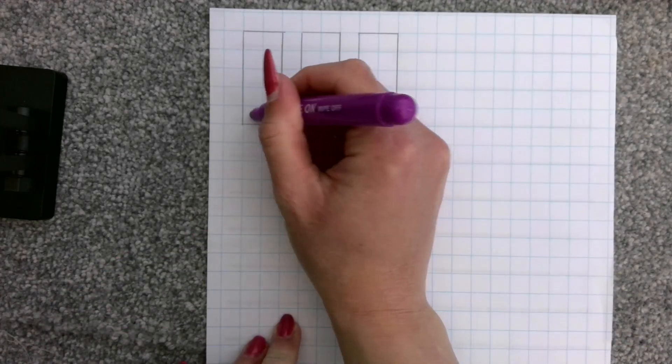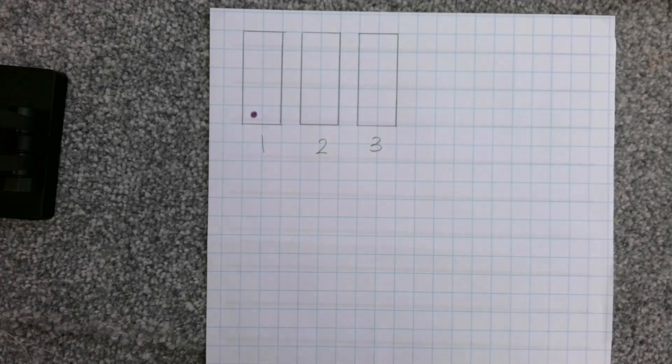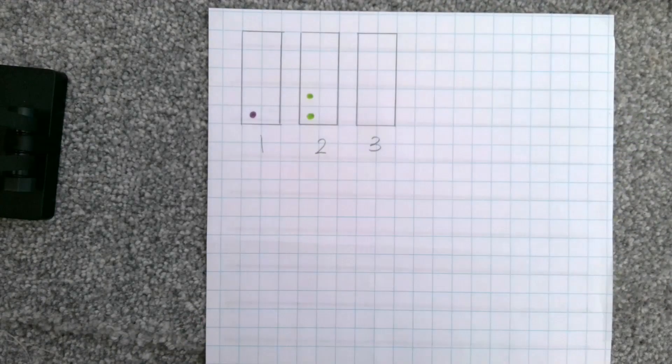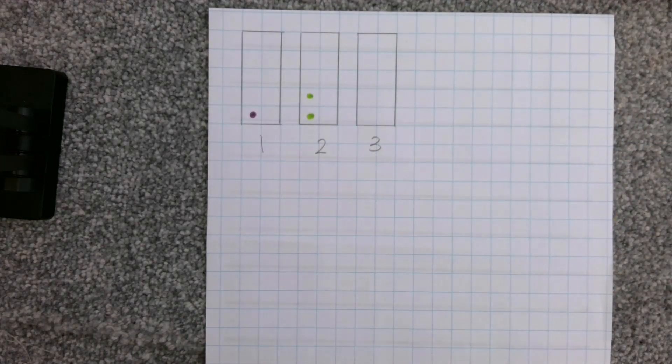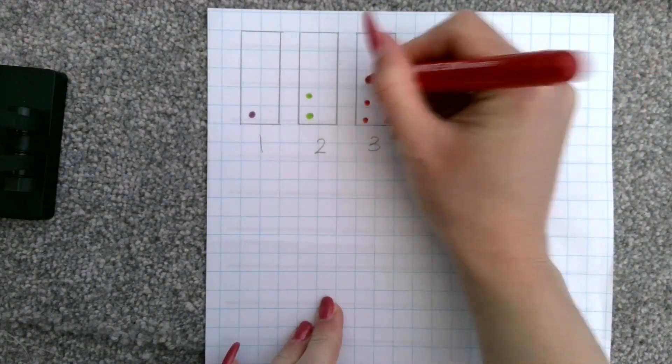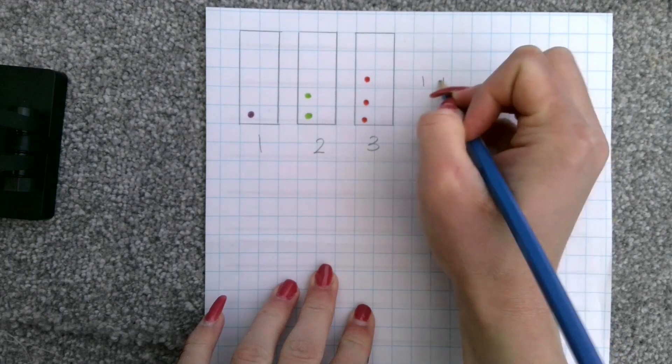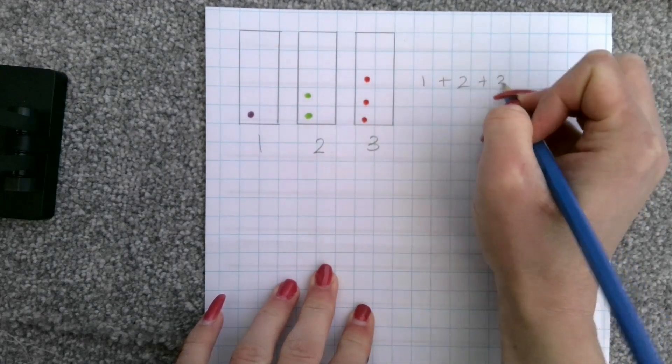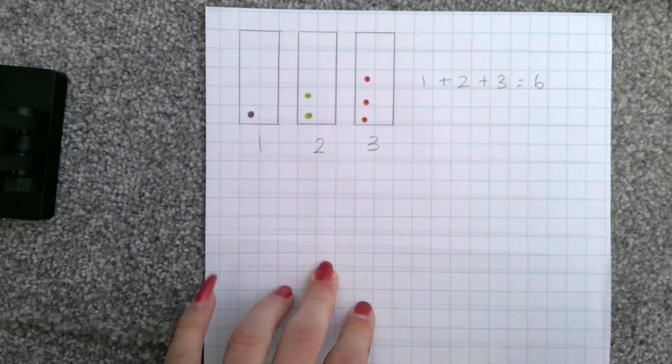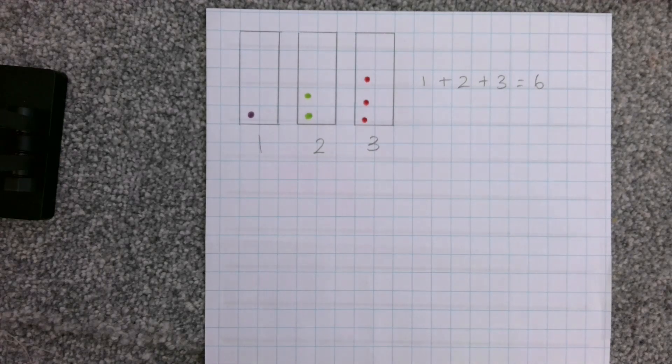So, I'm going to put those in my tens frame. One, two, and three. One, add two, add three, equals six. I can see that really clearly.